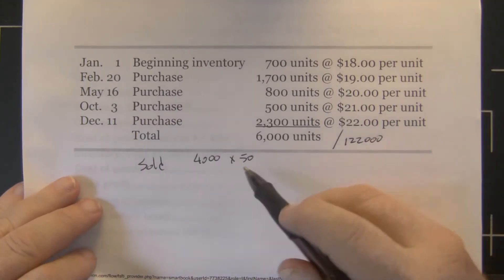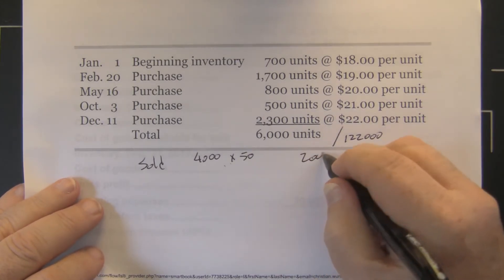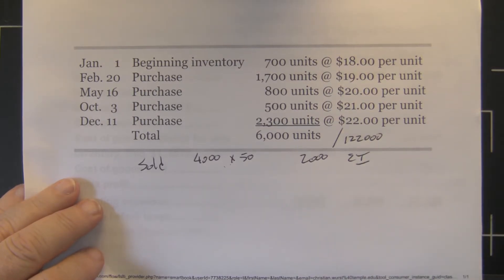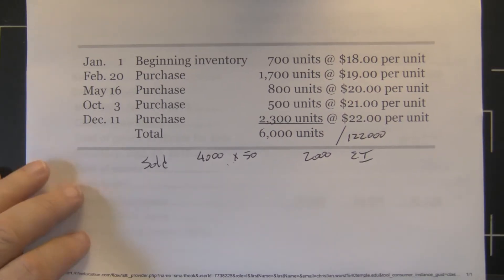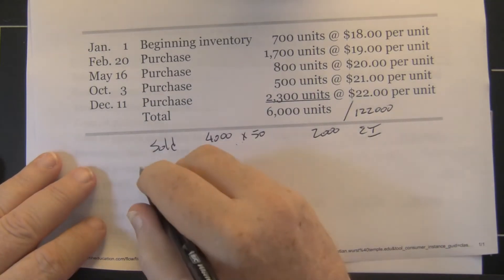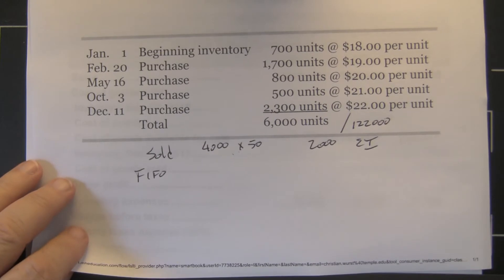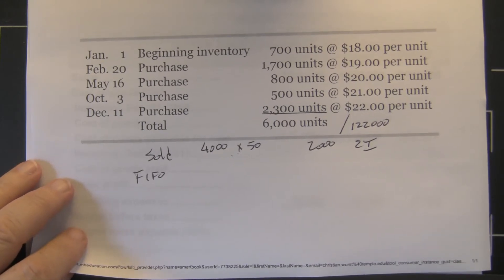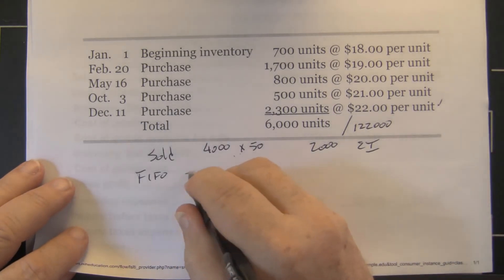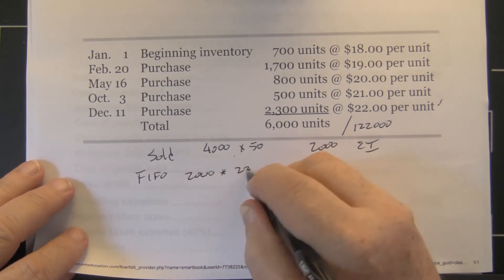We sold 4,000, we had 6,000, so we have 2,000 in ending inventory. The question is: which 2,000? Under FIFO it's the newest 2,000 — so that's 2,000 units times $23.